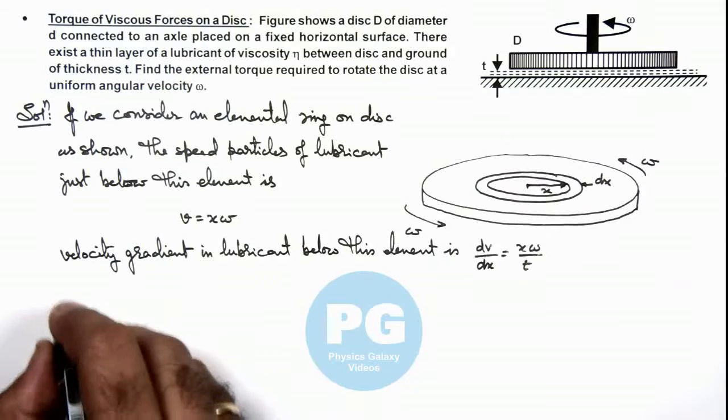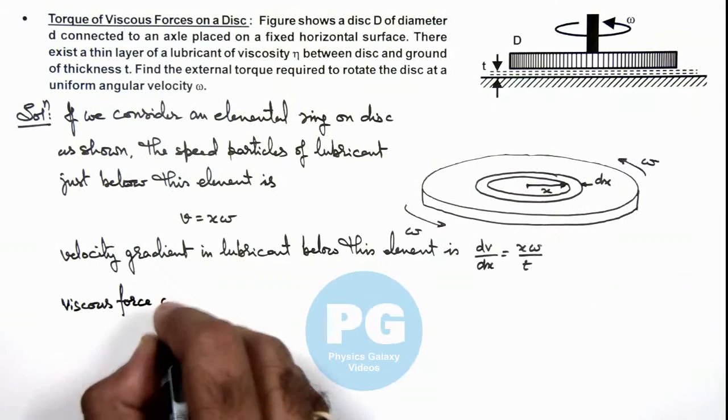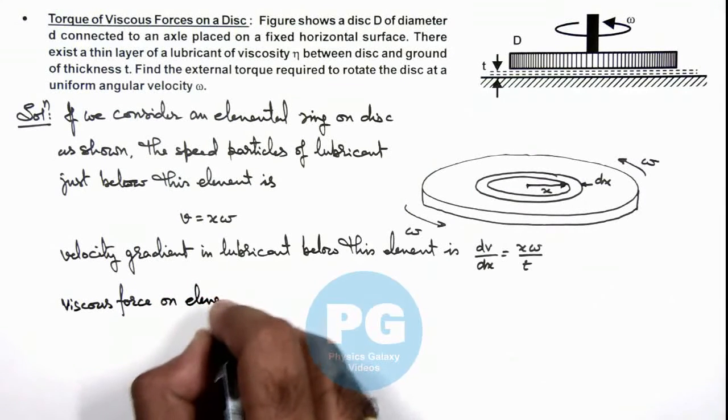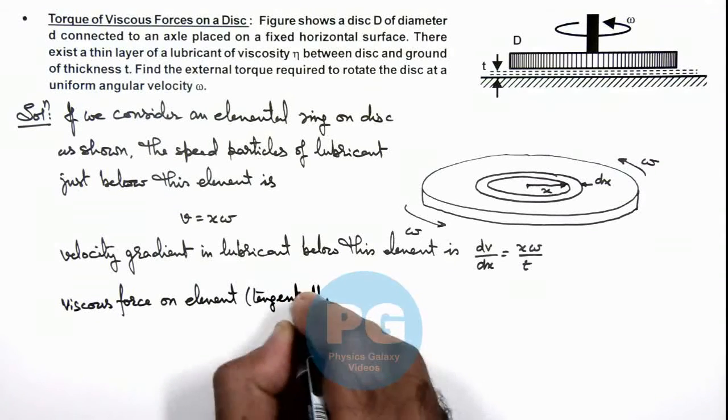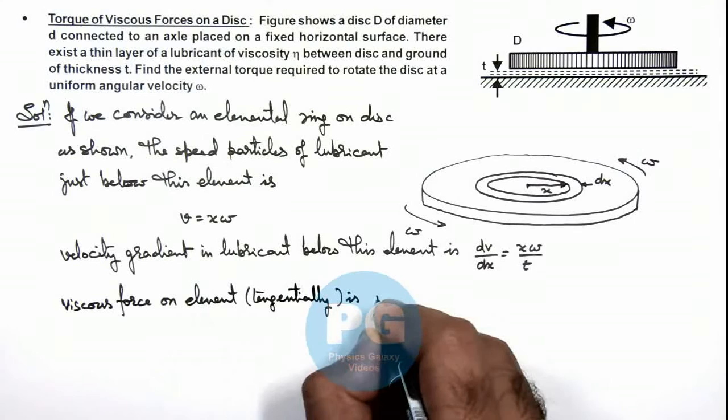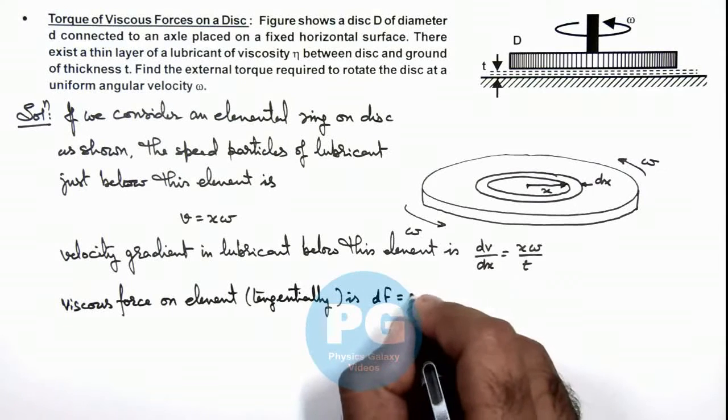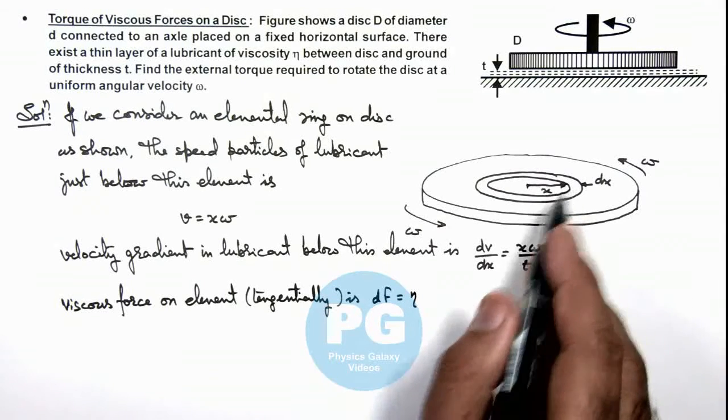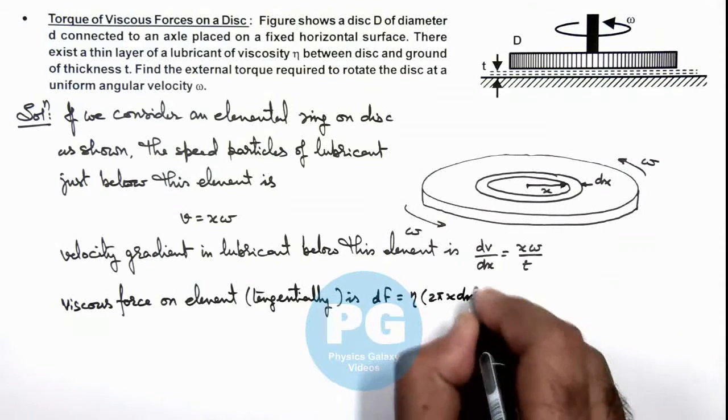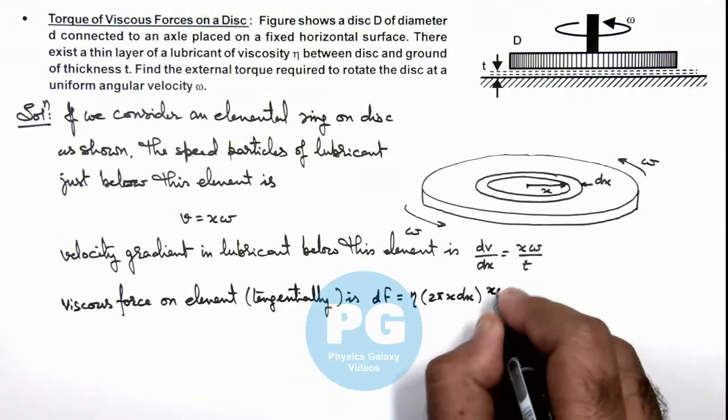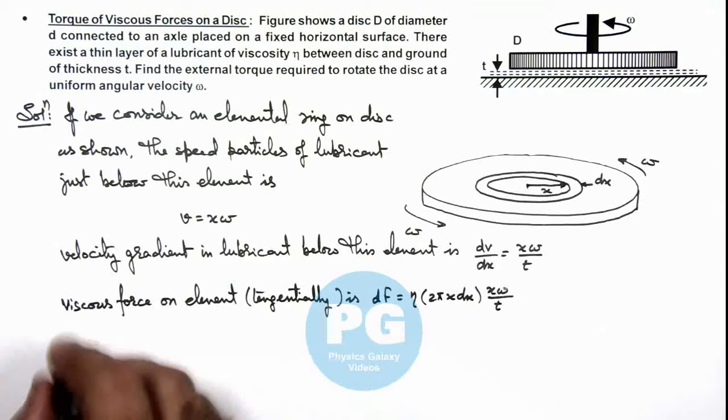So we can calculate the viscous force on element which will be acting tangentially. This viscous force we can write as df, which is eta A dv/dx, so it is eta. The area of this strip we can write as 2πx dx multiplied by the velocity gradient which is x omega by t.